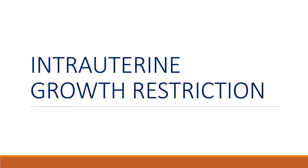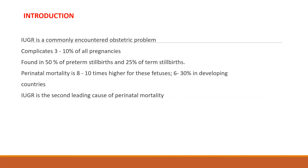Today I will be talking on intrauterine growth restriction, IUGR. It is a commonly encountered obstetric problem which complicates 3 to 10% of all pregnancies. It is found in around 50% of preterm stillbirths and 25% of term stillbirths. The perinatal mortality rate is 8 times higher for these fetuses, around 6 to 30% in developing countries. IUGR is the second leading cause of perinatal mortality.